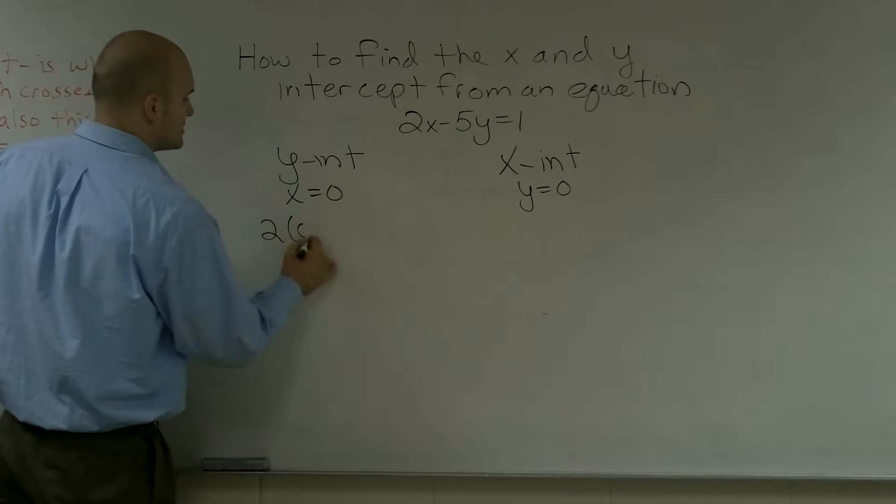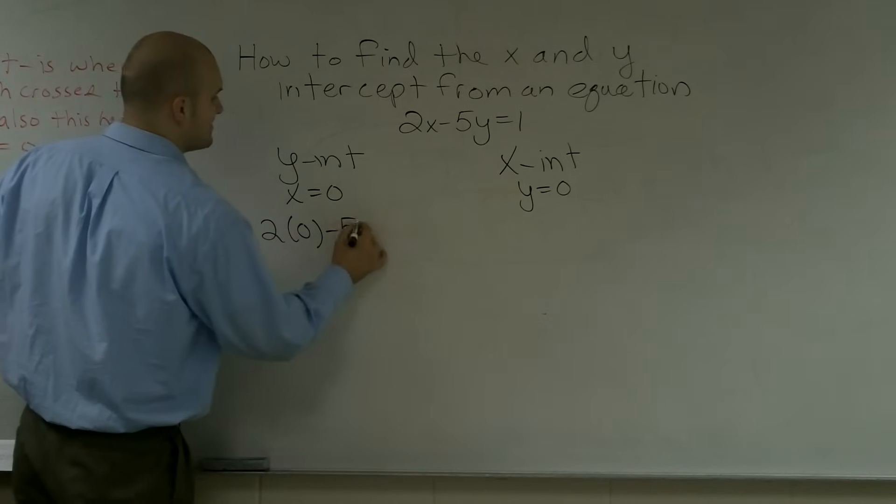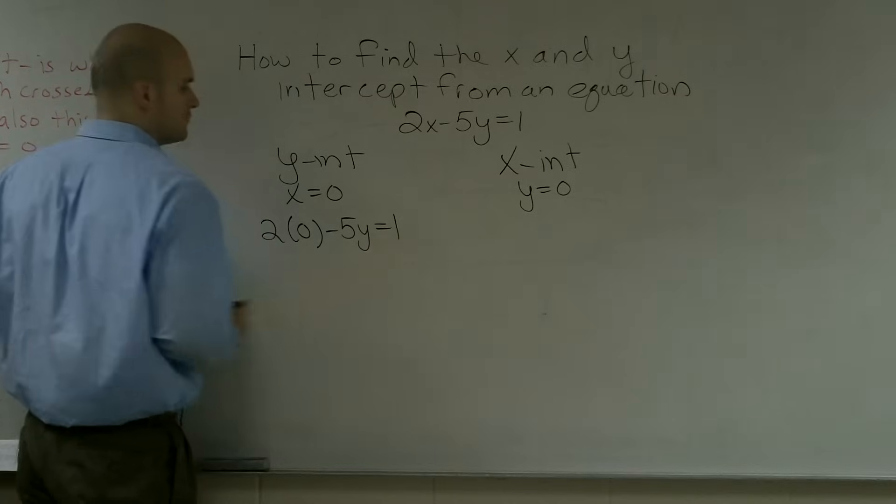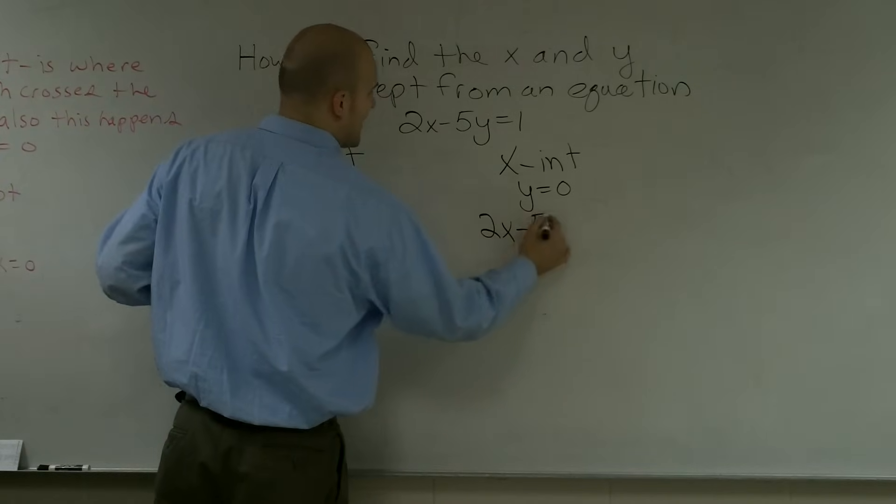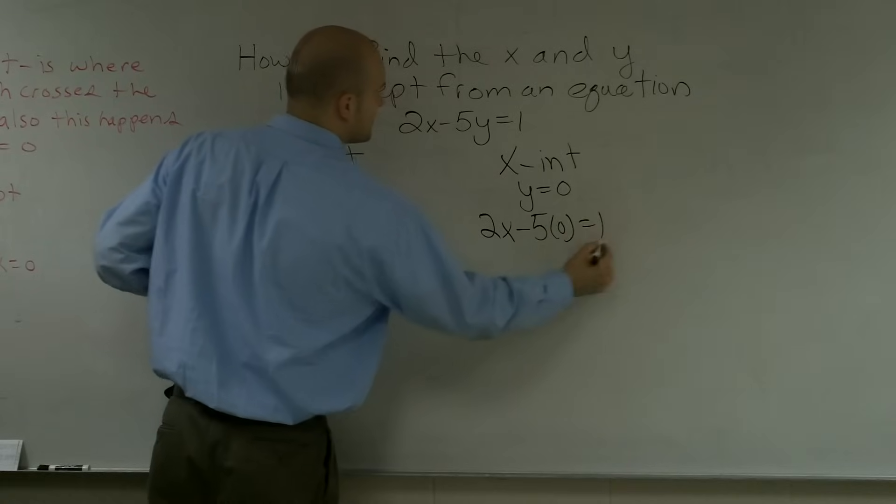So I'm going to plug in 2 times 0 minus 5 times y equals 1. And then over here, I'm going to say 2x minus 5 times 0 equals 1.